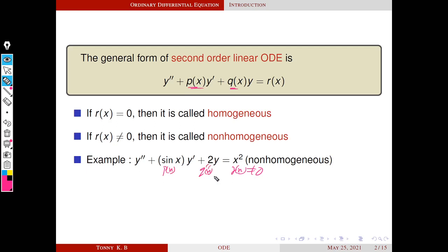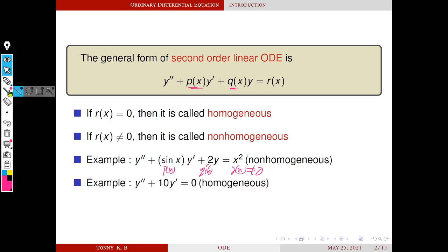So q may be a constant — that is possible. And this next example is a homogeneous differential equation. Why? Because the right-hand side is zero, so r(x) equals zero. That's why this is homogeneous.